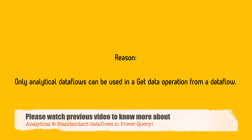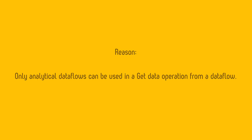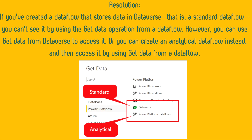Only analytical data flows can be used in a Get Data operation from a data flow — you cannot use standard data flows. I explained the difference between analytical and standard data flows in a previous video. If you are creating a data flow that stores data in Dataverse, that is a standard data flow, and you can access it using Get Data from Dataverse. Alternatively, create an analytical data flow and then access it using Get Data from a data flow.